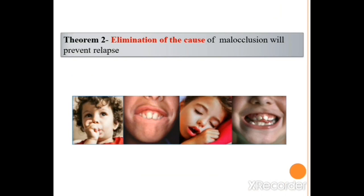The second theorem states that elimination of the cause of malocclusion will prevent relapse. Most malocclusions are associated with abnormal habits such as tongue thrusting, mouth breathing, and thumb sucking. When you eliminate or break these habits before going for corrective orthodontic treatment, you can prevent relapse. If you do not remove the etiology and proceed with treatment, the patient will end up with the same problem again. The third theorem emphasizes overcorrection: malocclusion should be overcorrected as a safety factor. For example, a mesiolingually rotated lower canine can be slightly rotated to the opposite side so that even if relapse happens, it will occupy the correct position. It is not possible to overcorrect every malocclusion.